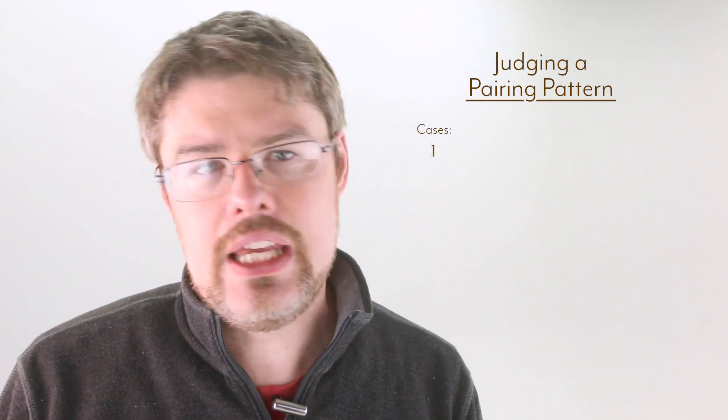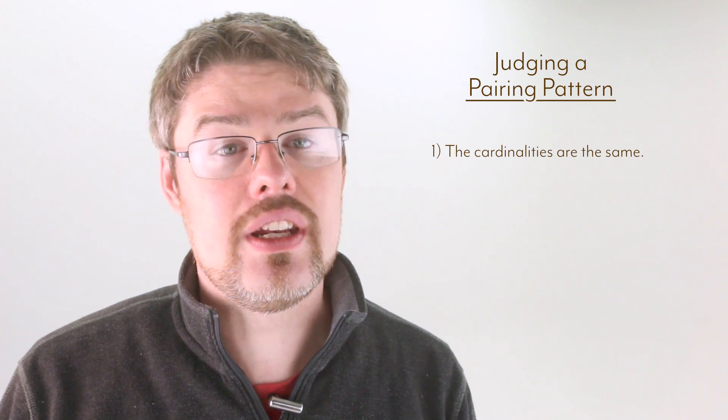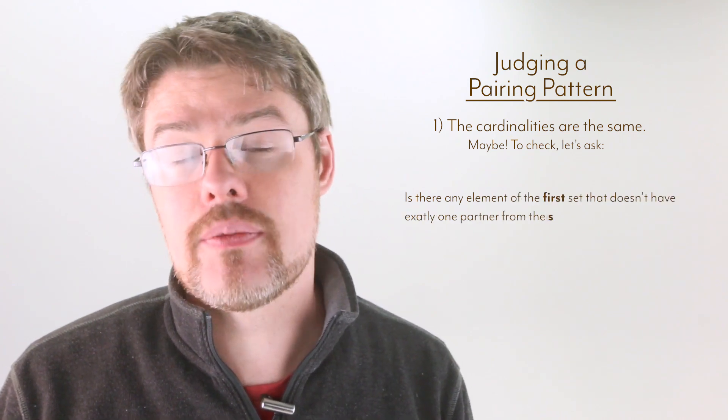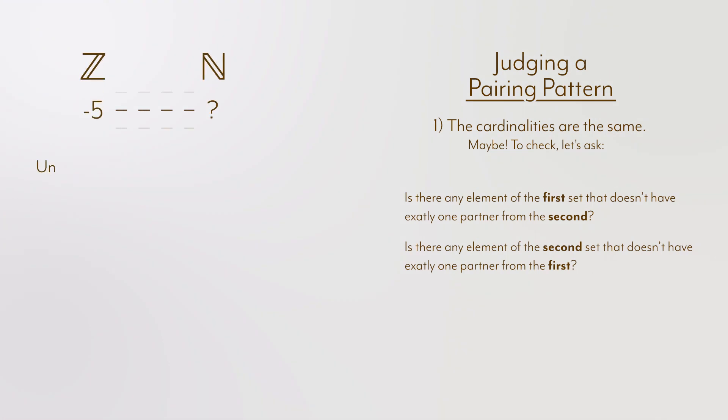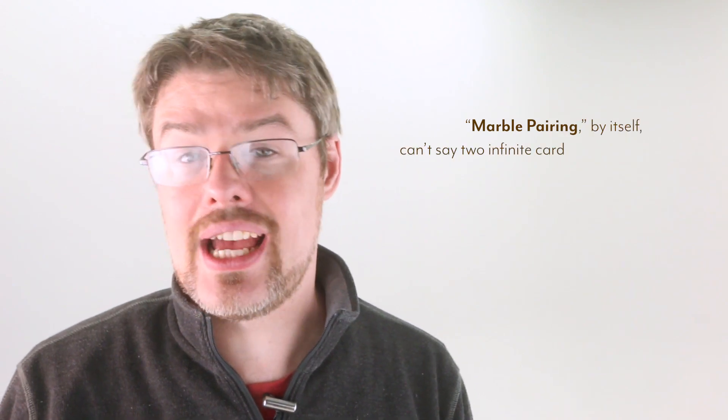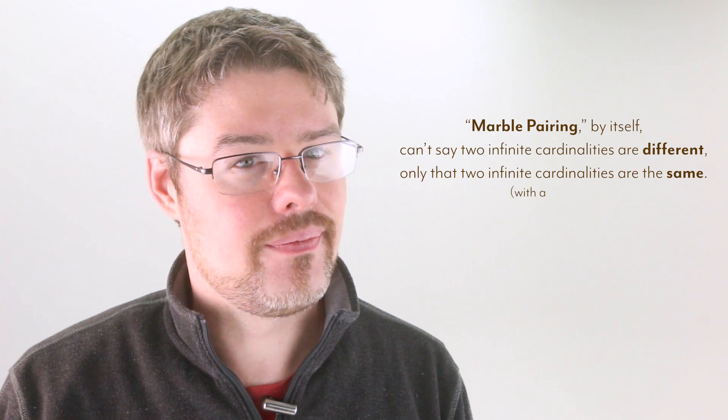What we need now is a way of judging a pairing pattern as good or bad. Let's consider the two cases. Either the cardinality is the same or it's different. If a pairing pattern shows that two infinities share the same cardinality, then we can ask the question: is there any member of the first set that doesn't have exactly one partner from the second, or vice versa? If such an unpaired element exists, then that particular pairing pattern isn't good enough on its own to say very much. However, if you show that such an unpaired element cannot exist, then that particular pairing pattern works, and it's actually called a bijection. On the other hand, there's a problem. If a pairing pattern shows leftover elements on one side, we cannot say that one side is bigger than the other. Think about the case in the earlier example. Infinity plus one is still infinity, as I mentioned at the top. Likewise, infinity plus six is still infinity. So this strategy is not by itself enough to show that two infinite cardinalities are different, only that two infinite cardinalities are the same.